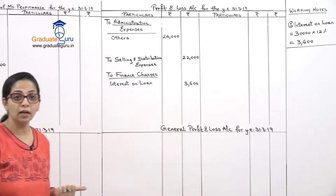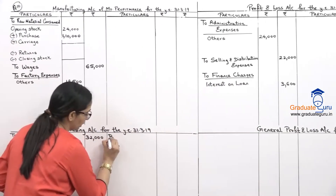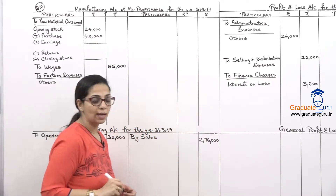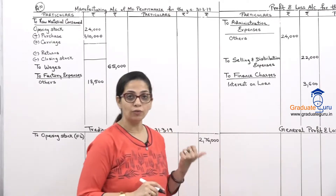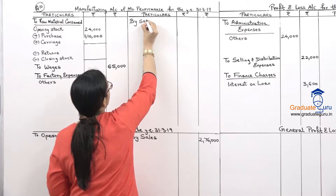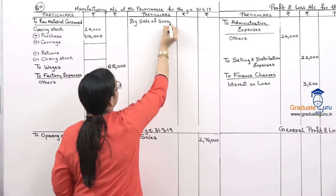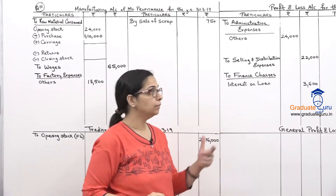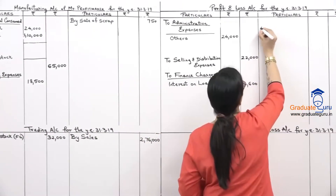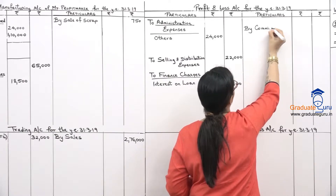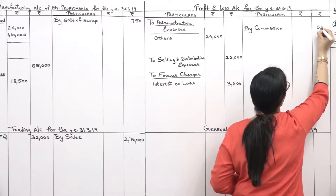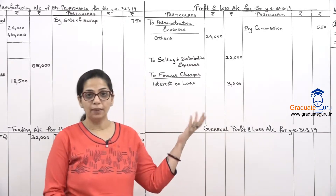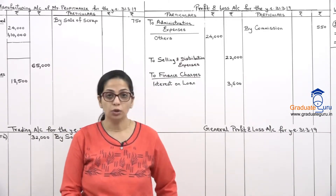Then we have sales in the trading account: 2,76,000 - no returns given, so written directly outside. Sale of scrap goes on the credit side of manufacturing: 750. Commission is income taken to profit and loss account - leaving space for gross profit - by commission: 550. Our trial balance is now empty for trading, P&L, and manufacturing. Balance sheet items have not been touched yet.